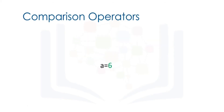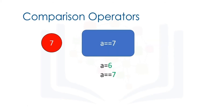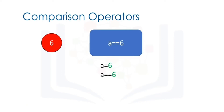Let's say we assign a value of a to 6. We can use the equality operator, denoted with two equal signs, to determine if two values are equal. In this case, if 7 is equal to 6 — as 6 is not equal to 7, the result is false. If we performed an equality test for the value 6, the two values would be equal. As a result, we would get a true.